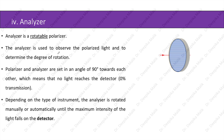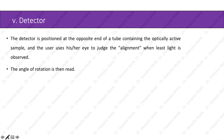The analyzer is a rotatable polarizer — whereas the polarizer is fixed, the analyzer is in a rotating state. It is used to observe the polarized light and determine the degree of rotation. The polarizer and analyzer are set at 90 degrees to each other, meaning no light reaches the detector (zero percent transmission). Depending on the instrument type, the analyzer is rotated manually or automatically until maximum light intensity falls on the detector. The angle of rotation is then read.